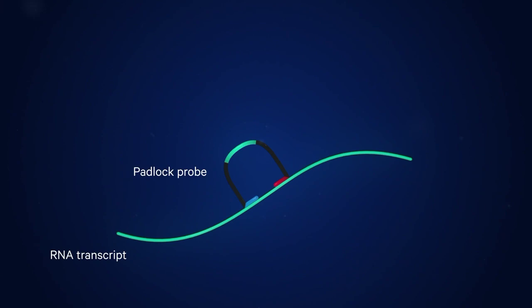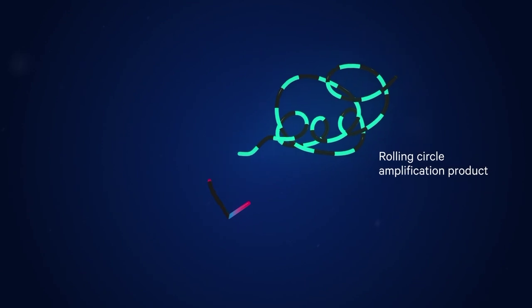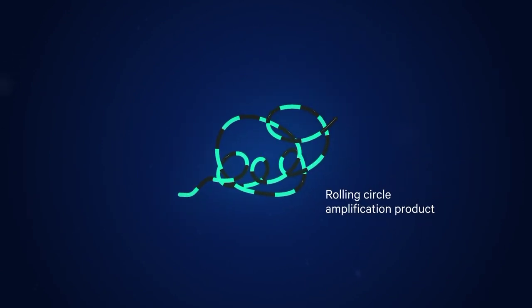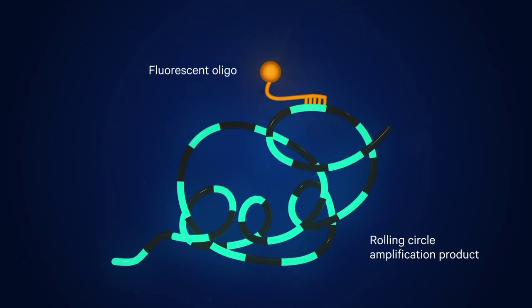Once these probes have found their target sequences and the probe ends are ligated, we amplify these ligated molecules by rolling circle amplification. This makes a clonal amplification copy of those probe sequences on the spot where that original molecule was located.